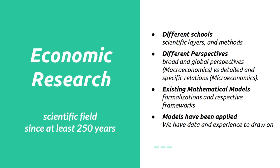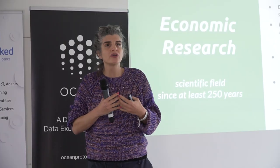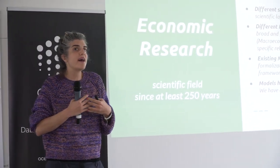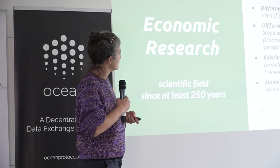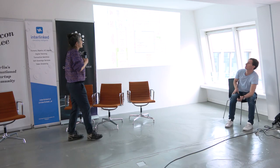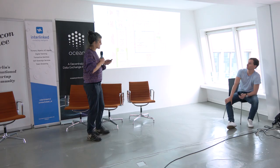There are different schools with different scientific layers and methods. We have a matrix of all the economic schools - neoclassical, neoliberal, Keynesianism, institutional economics, Marxism, et cetera. We have economists, but what kind of economic theory they focus on and what methods they know is a whole different question. When you approach economists or researchers, you need to know what kind of economist you need - just as most of you know some technology but not all of it.